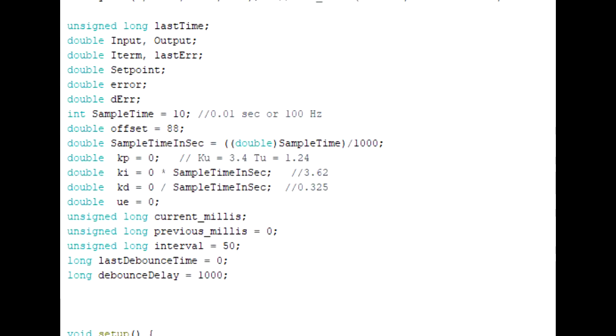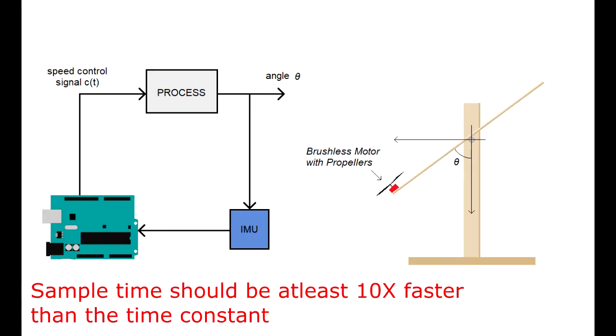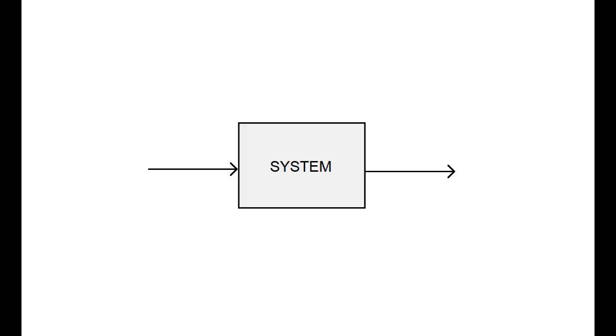Taking a look at the code, I've set the sample time to 10 milliseconds or 100 hertz. The sample time should be at least 10 times faster than the time constant of the system. The time constant is a time that represents the speed a particular system takes to reach 63% of its final value. For example, if I provide a system with a step change in the input, the time it takes to reach 63% of the final value is the time constant.